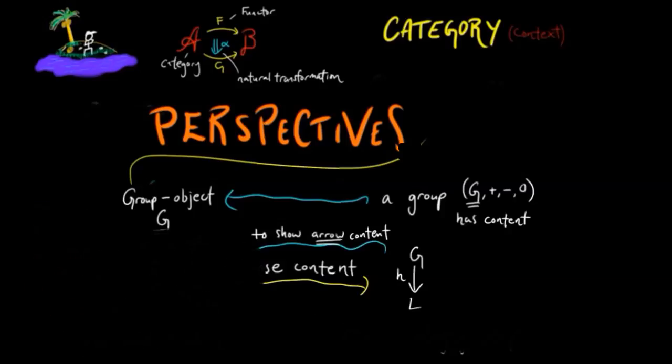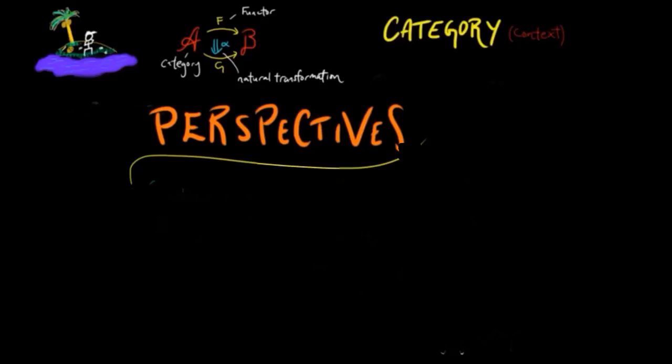So when one encounters a problem with mathematical significance, the first step is to contextualize it in terms of its mathematical content. This is adding the sense to the problem. Then we isolate the structure involved, which will allow us to define morphisms, giving us the object in a context.